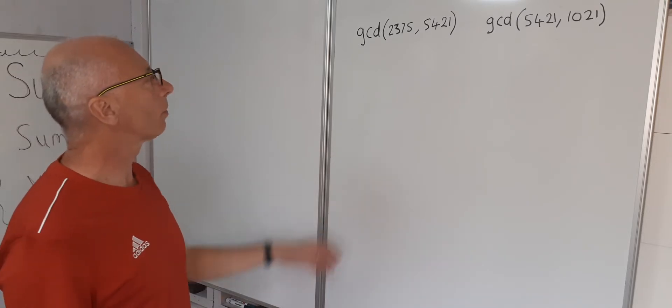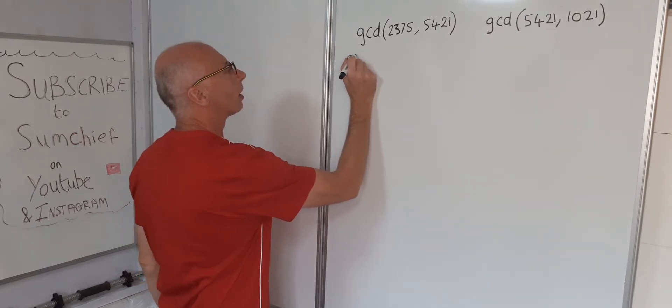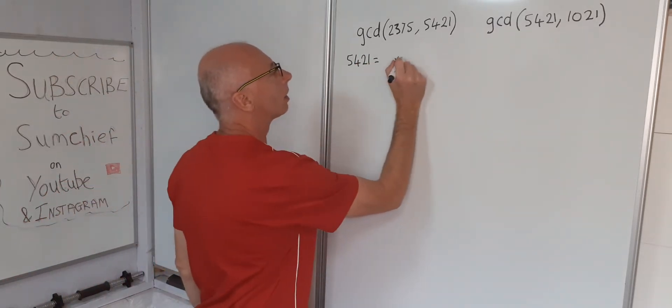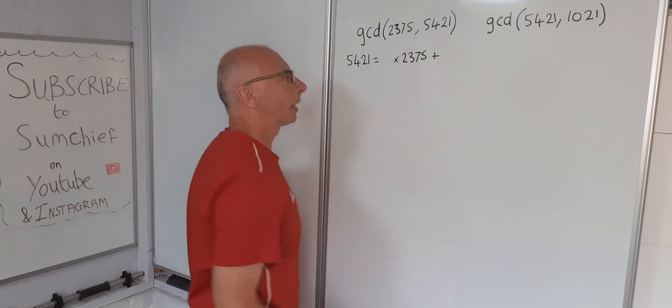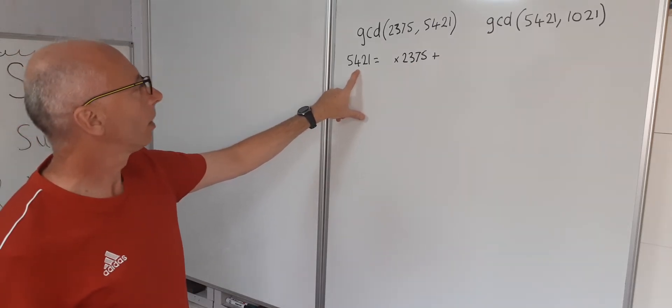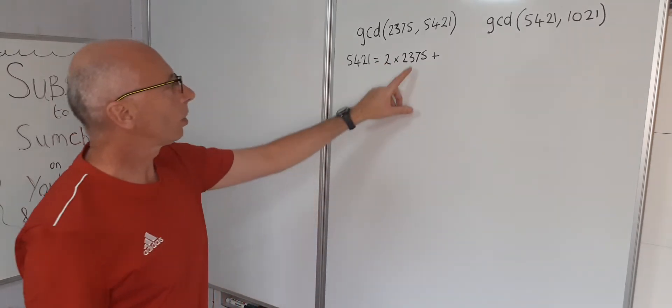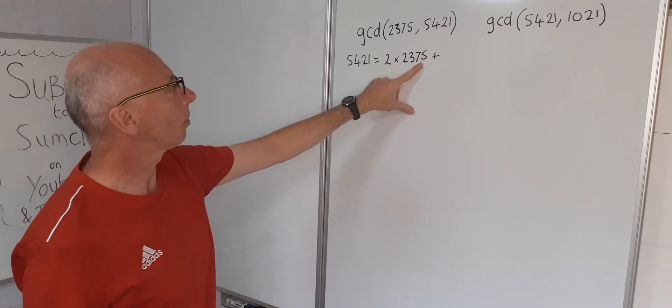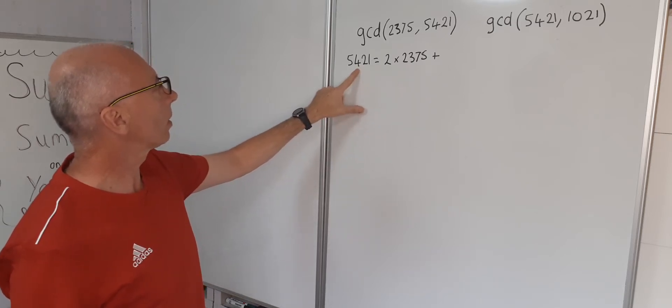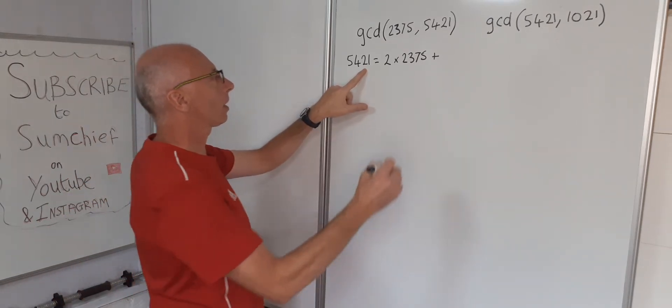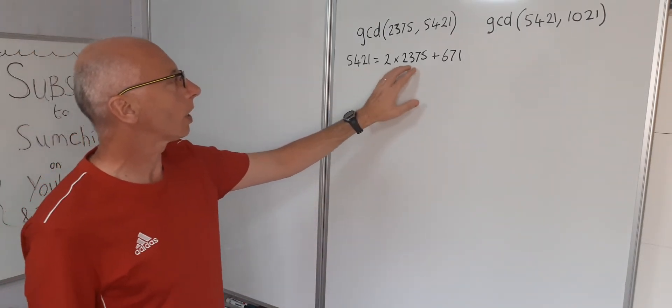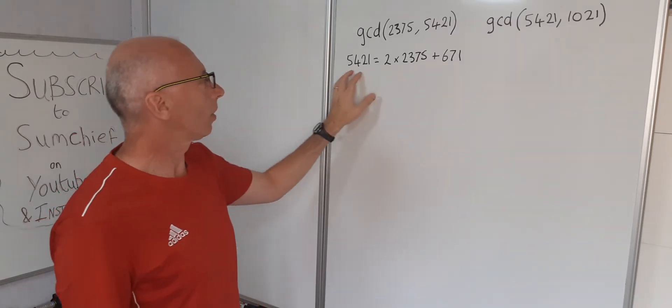So Euclid's algorithm first of all take the biggest number 5421 and that equals something times the smaller number and then there's going to be a remainder. Now we can see 2375 is just under half of this so we know it's going to be two times something. So two times 2375 is 4750, so that's 4750 taken off this, that's going to be 250 plus 421 so that's 671. So 5421 equals 2 times 2375 plus 671, so that is a true statement.